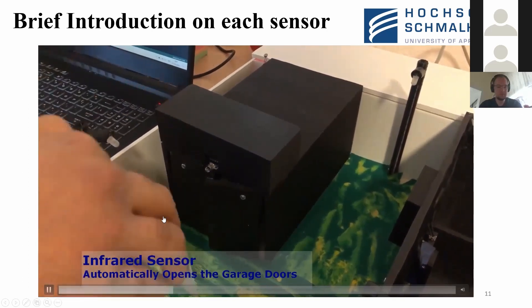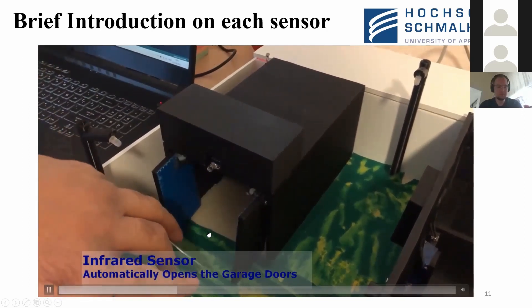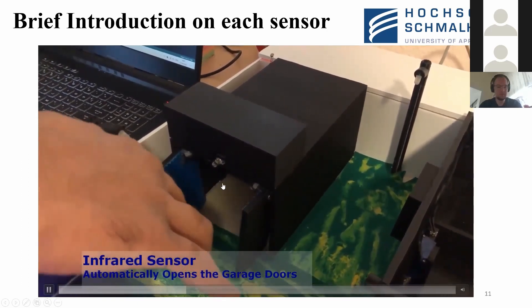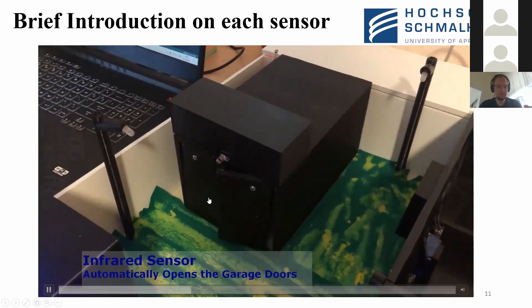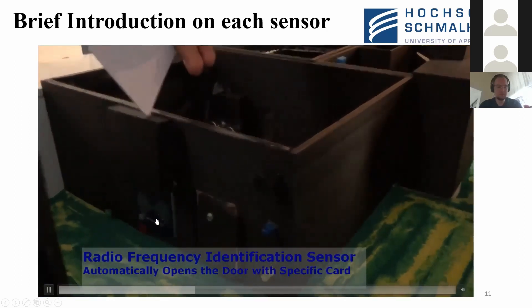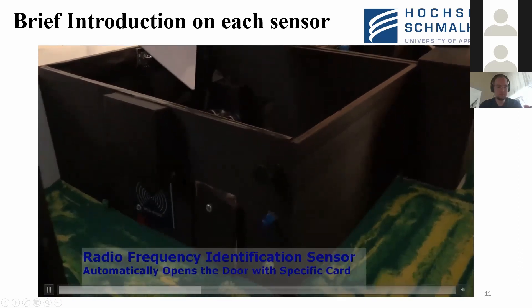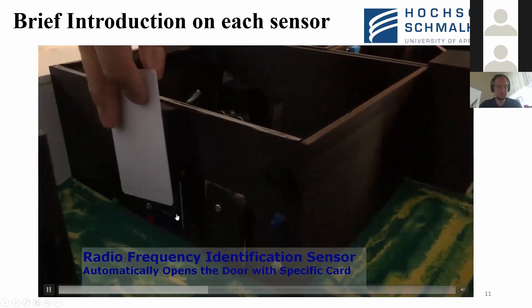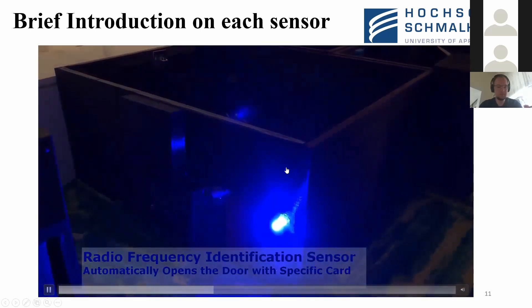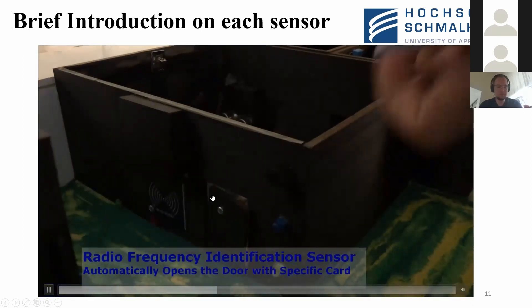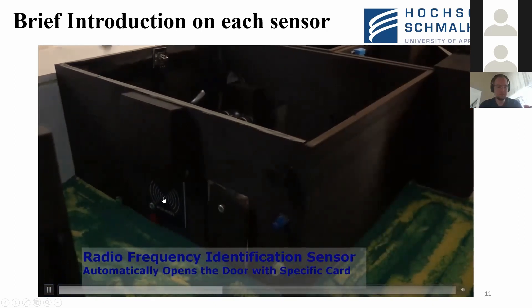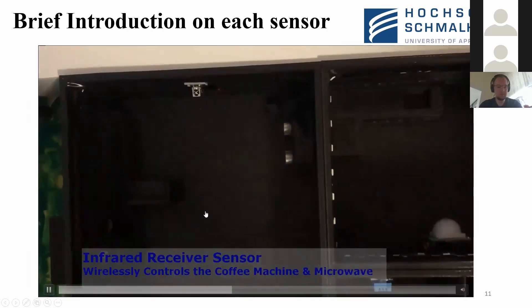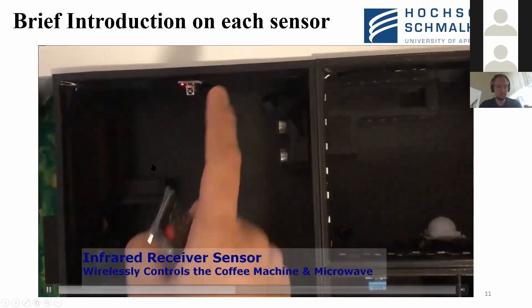This is the second — the infrared sensor module. Once the person comes in front of it, the gates automatically open and remain open while the person is inside the carriage. Once they come out, the gates close. This is the third — the RFID sensor. When the white card is placed in front of the sensor, the gate opens with a light. An unauthorized card causes the red light to turn on and the gate does not open.